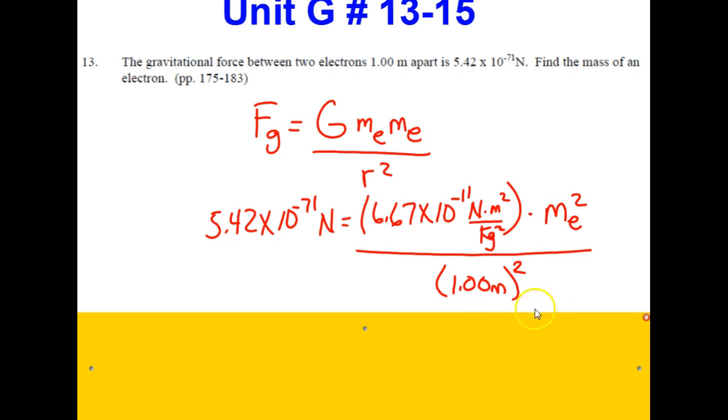And so when we go ahead and solve this problem, you're going to take the force. And since one squared is one, it's a wash. So you're going to take the force and divide by the gravitational constant. And then you'll take the square root of that answer. And when you do that, you should get the mass of electron to be 9.01 times 10 to the negative 31 kilograms.